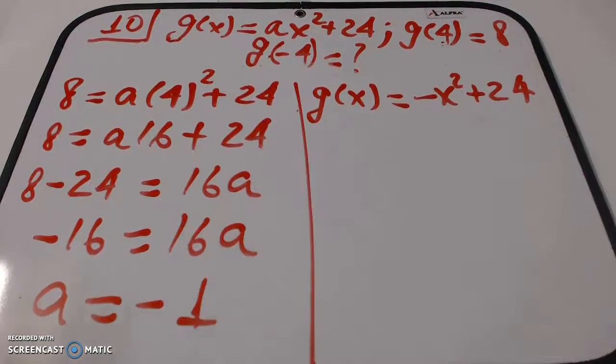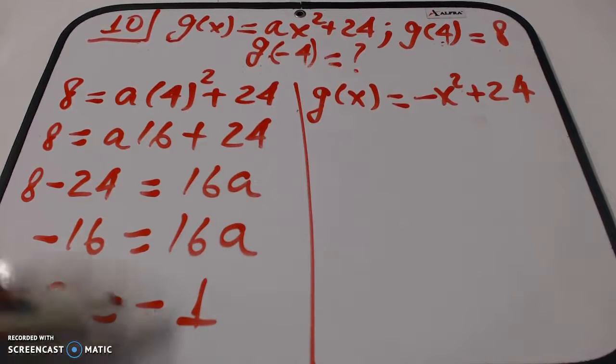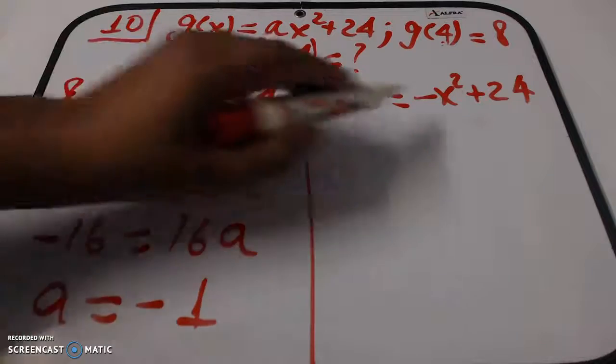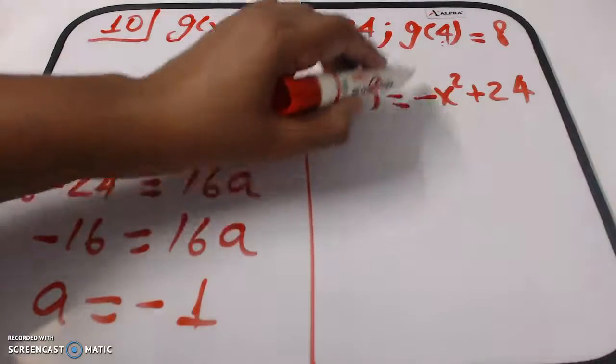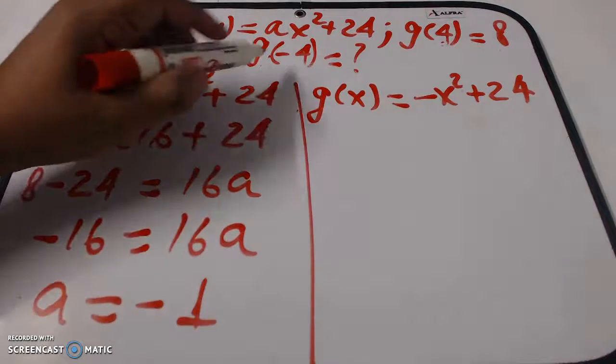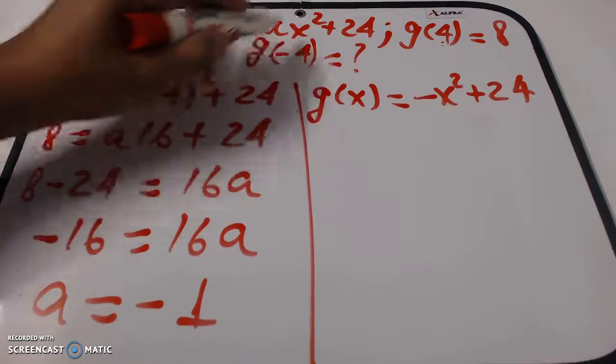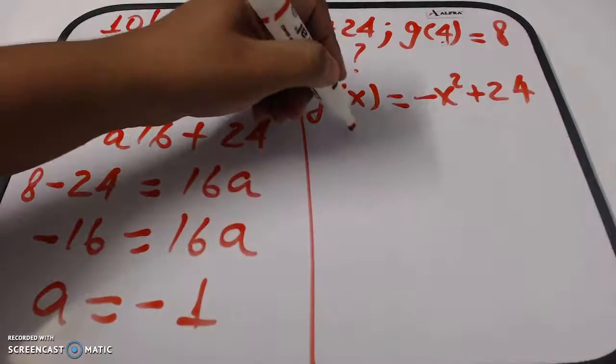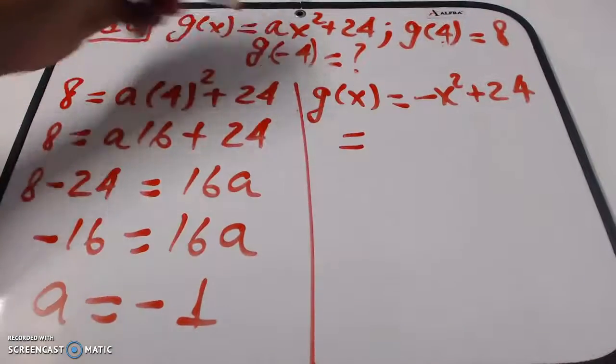Now that we found a = -1, we substitute it into the original function. We don't have to write the 1, just the negative sign. The second step is plugging in x = -4 into the function, which now has no unknown letter a.